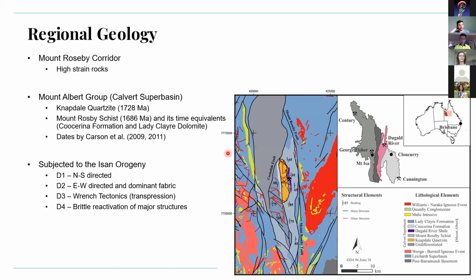Dougal River is situated in what's called the Mount Rosby high strain corridor, which is bounded by the Mount Rosby Fault to the east and the Kalula Fault to the west. The corridor comprises the Mount Albert Group of the Culvert Superbasin, with the host rocks to the deposit dated at 1686 Ma.